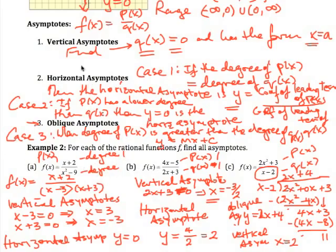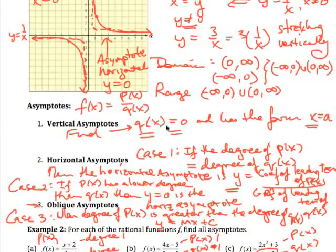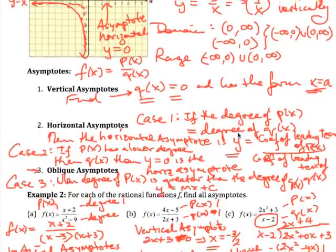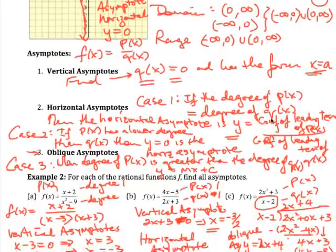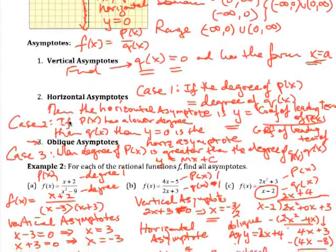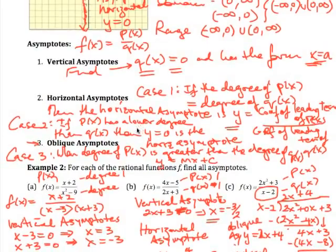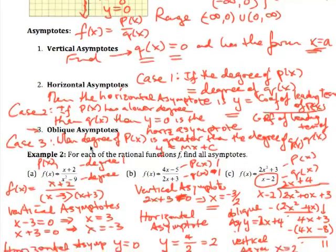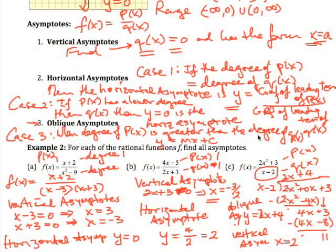In summary: to find a vertical asymptote, set q(x) = 0 and solve for x. For horizontal asymptotes — if degrees are equal, take the ratio of leading coefficients; if the top degree is lower, y = 0 is the asymptote. For Case 3, when the top degree is greater, divide to get the oblique asymptote, which is a non-vertical, non-horizontal line at an angle.